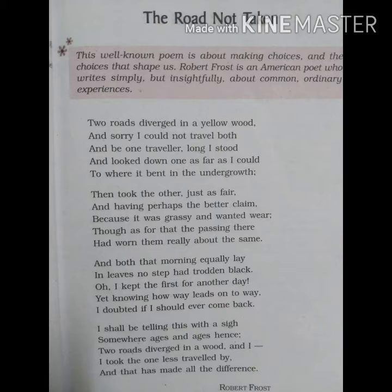This road had been worn by the feet of the people who walked over them. In the fourth line: 'Though as for that the passing there' — it means this road had been worn by the people who walked over it. The speaker appears confused as he couldn't make out whether both the roads were equally worn out or not.